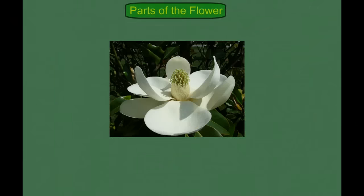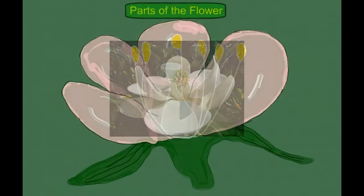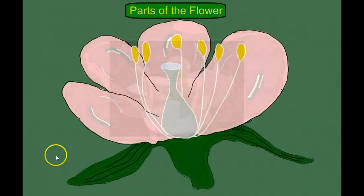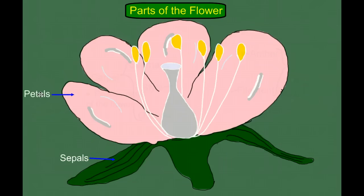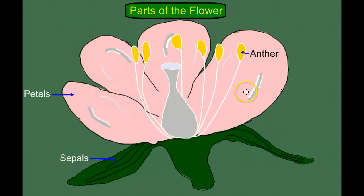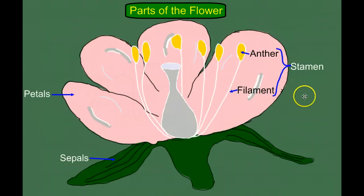We'll start with parts of the flower. When we look at the flower, we see down here we have the sepals. These were covering the flower when it was just a bud, protecting the growing bud. We have the petals — we'll talk about the function of petals later. We have the anther and the filament, which together make the stamen. This is the male structure of a flower.